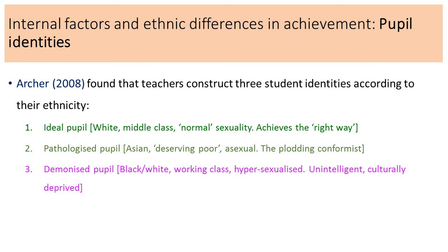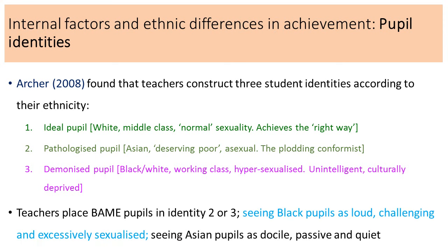Finally, demonized pupils - these tended to be black or white working class pupils, often seen as hyper-sexualized, viewed as unintelligent, and culturally deprived. Teachers place black Asian minority ethnic pupils into identity two or three - seeing black pupils as loud, challenging, and excessively sexualized, while seeing Asian pupils as docile, passive, and quiet. This reflects a racist mindset placing different groups into subcultures and ultimately treating them very differently.